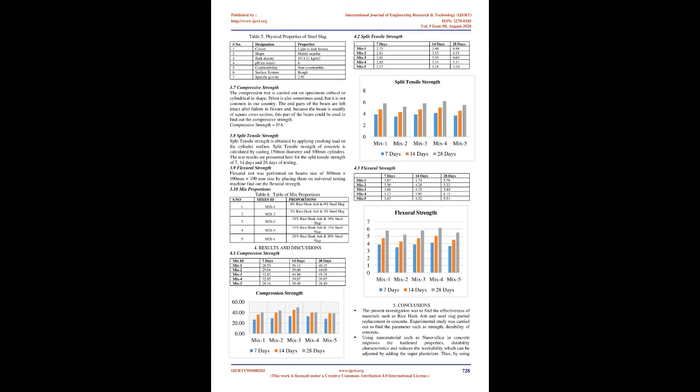3.5 Rice Husk Ash: Rice husk ash is an agricultural waste obtained from milling of rice. This is usually discarded to the landfill without further use, thus contributing to environmental pollution. Rice husk ash is a by-product from burning rice husk under controlled temperature and burning time. In the present investigation, rice husk ash was partially replaced in Portland cement at various percentages to study compressive strengths and split tensile strengths. The physical properties and chemical composition of rice husk ash are tabulated.